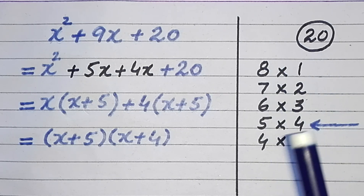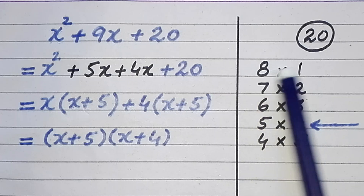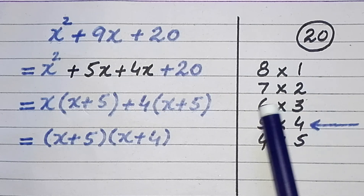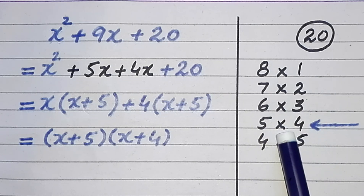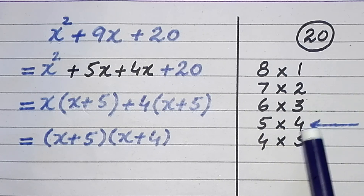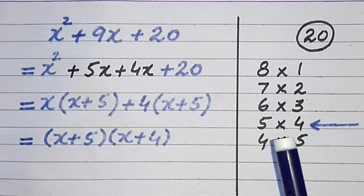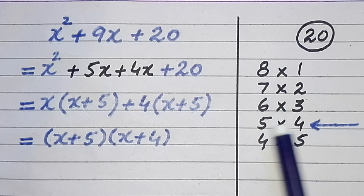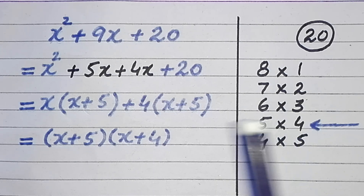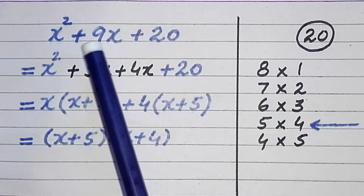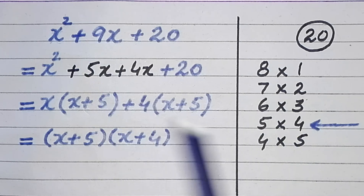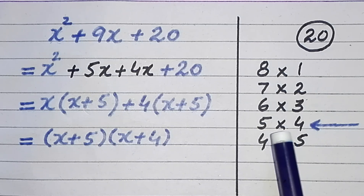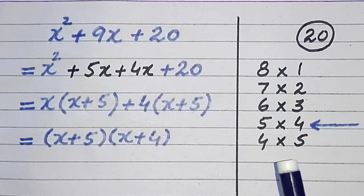In step number 3 we choose the pair which gives us this product. In step number 4 we decide about the signs of this pair. As we are moving below this number, both members of this pair are getting the same sign.